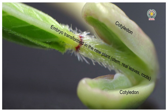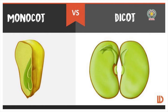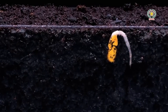Some plants have one seed leaf — they are called monocot seeds. Plants like maize and rice have one seed leaf. Other plants have two seed leaves and they are called dicots. The embryo has a shoot and a root.